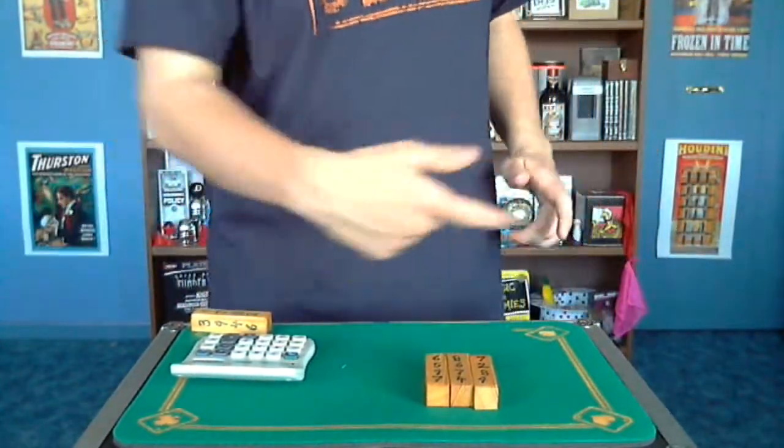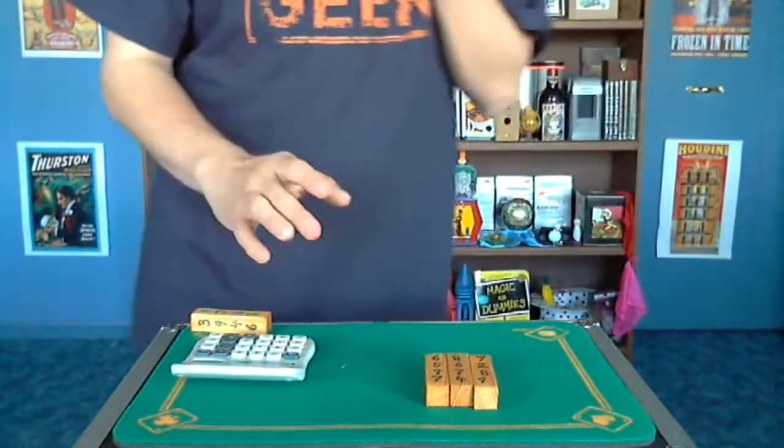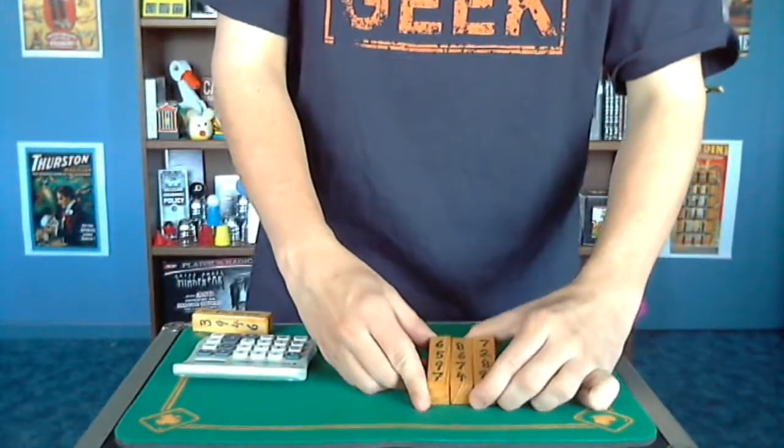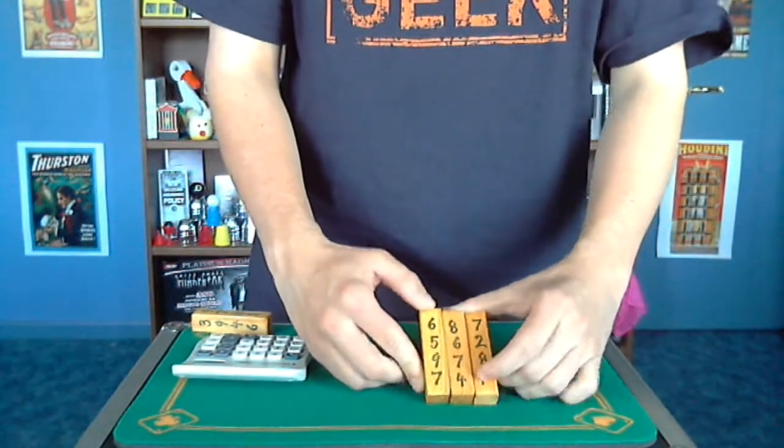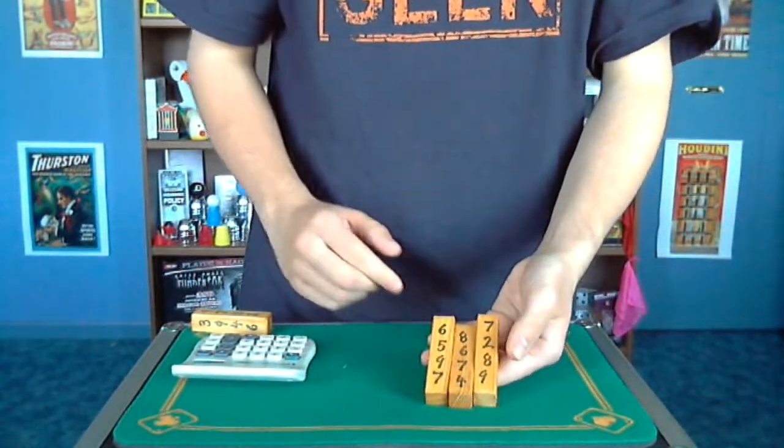We'll roll these up, and all the ones that are face up. So now, we're going to add the three digits going across. Before I do that though, let me tell you what the number is going to be. It's going to be 2,976.